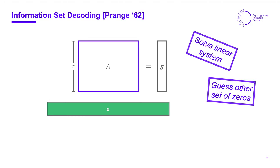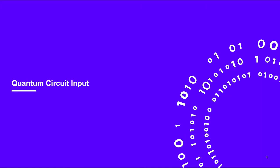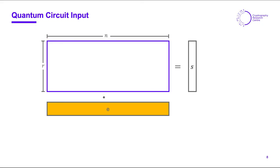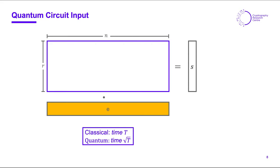I won't speak in detail about how the quantum circuit for this procedure is structured, but what is important as a baseline is to know what the input to the quantum circuit is. First, to give a feeling of the speedup we can expect: if we have a classical time T for the procedure, the quantum version gives us time square root of T — where we disregard polynomial factors. So we don't get a square root improvement on the Gaussian elimination, but we get it on the number of subsets we need to loop through to find one where E is completely zero.